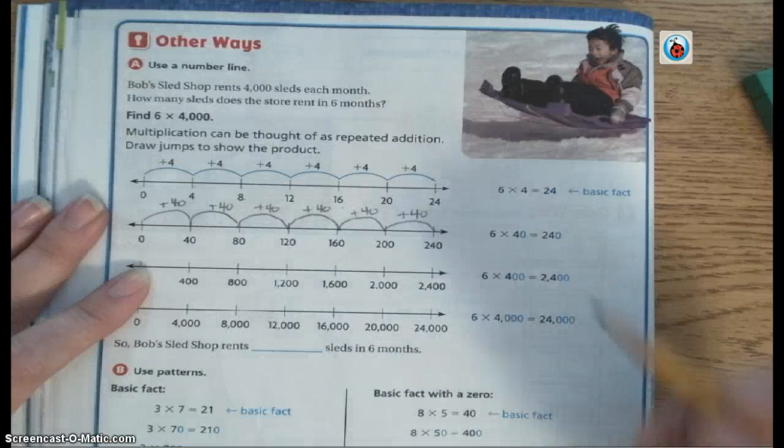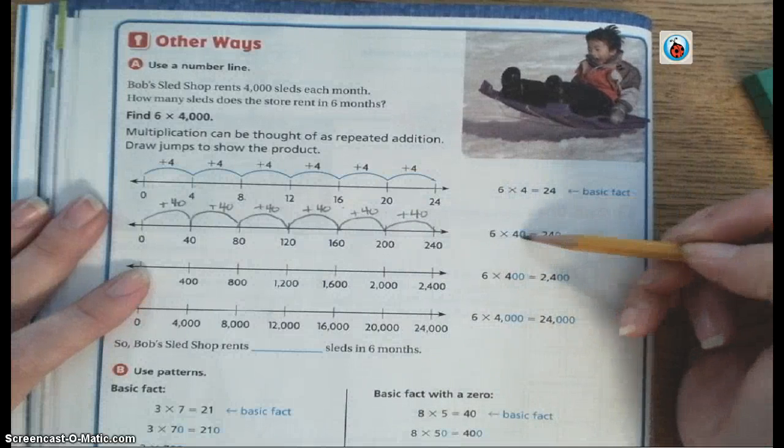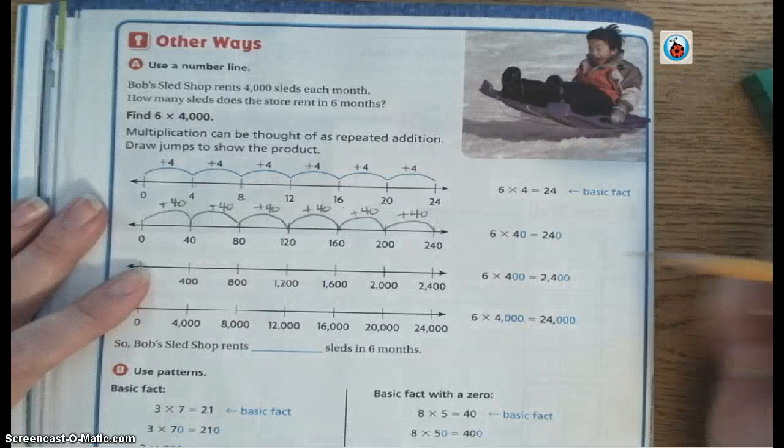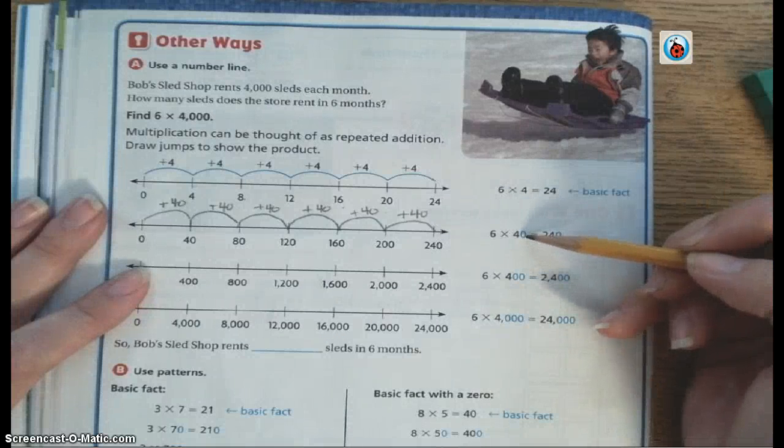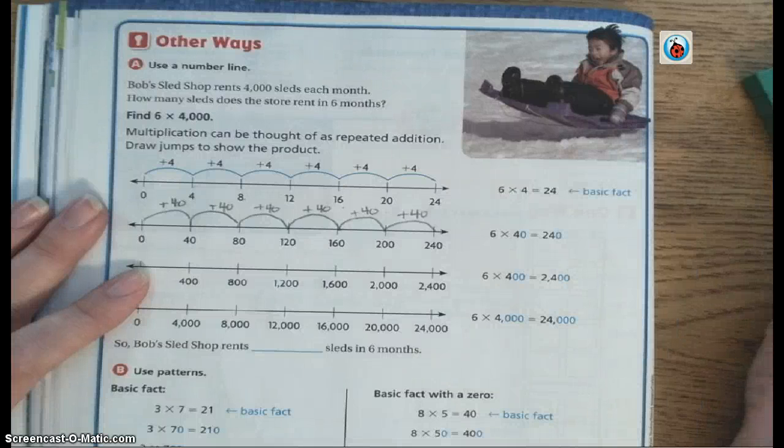So all I did was, in this problem, I had 6 times 4 is 24. Now I have 6 times 40 is 240. So both my factor and my product have an extra 0.